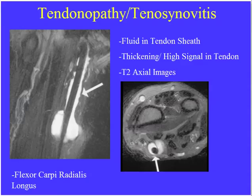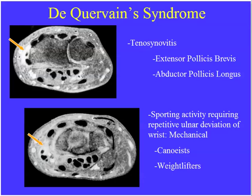Moving to wrist imaging — regarding tendinopathy or tenosynovitis, this is a common entity on in-service exams. The flexor carpi radialis is one of the more common tendons to develop this. Fluid within the tendon sheath is tenosynovitis; thickening or intrasubstance signal within the tendon itself is tendinopathy. De Quervain syndrome involves the extensor pollicis brevis and abductor pollicis longus — we'll see high signal surrounding those tendons and possibly reactive marrow edema within the adjacent radial styloid.